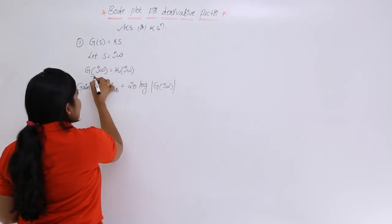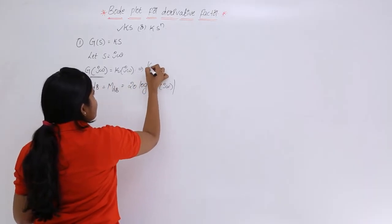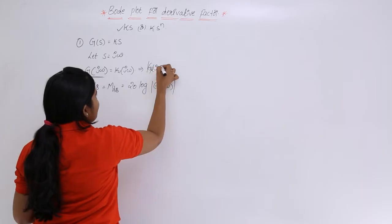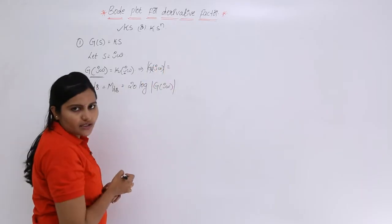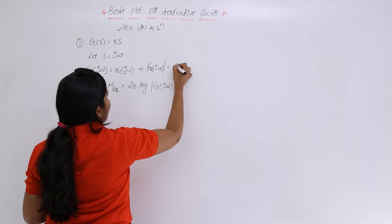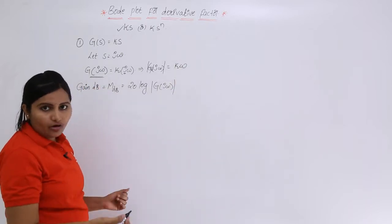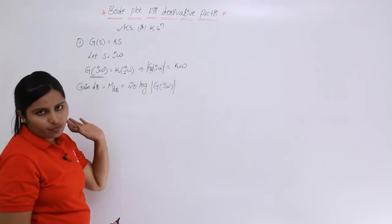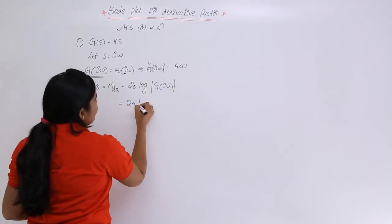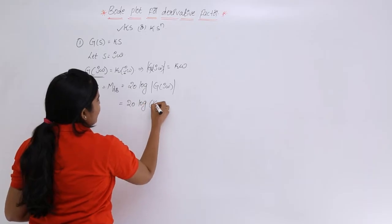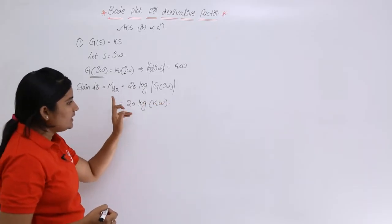We have G(jω) = K·jω. Taking the modulus, the imaginary term drops out and we get |G(jω)| = Kω. Therefore, the magnitude in dB is M = 20 log(Kω). This is your gain in dB.